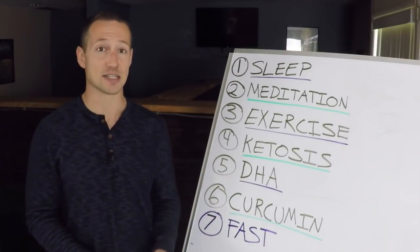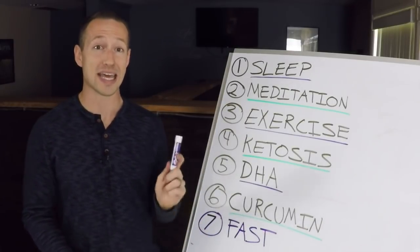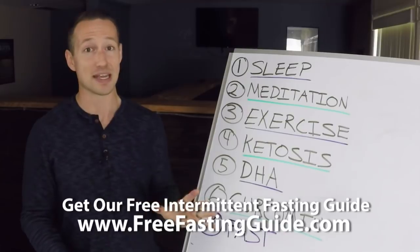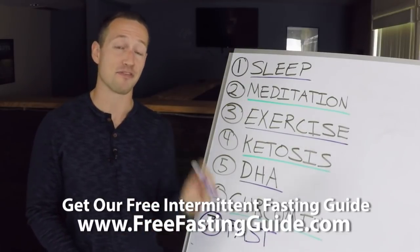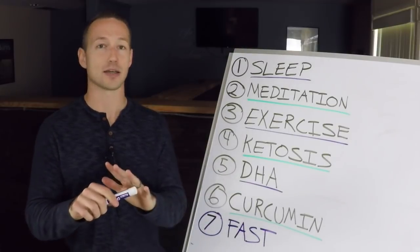Number seven is going to be fasting. So in particular, intermittent fasting. Intermittent fasting in particular has been shown to increase your body's production of BDNF by, get this, anywhere from 50 to even 400 percent, which is absolutely staggering.